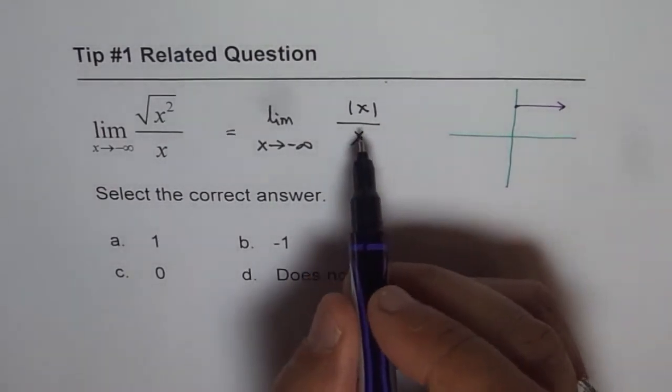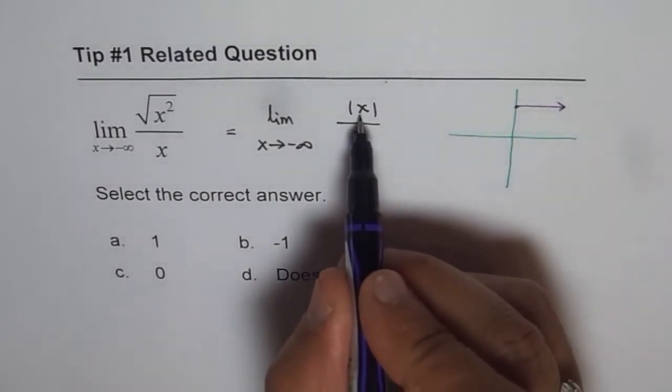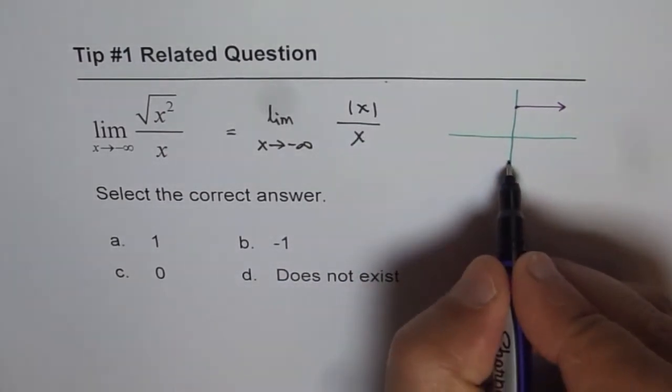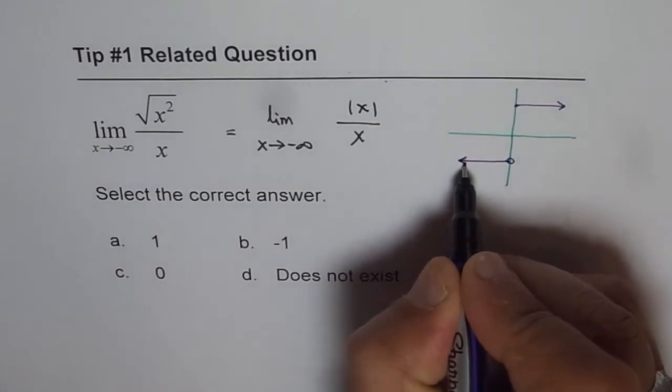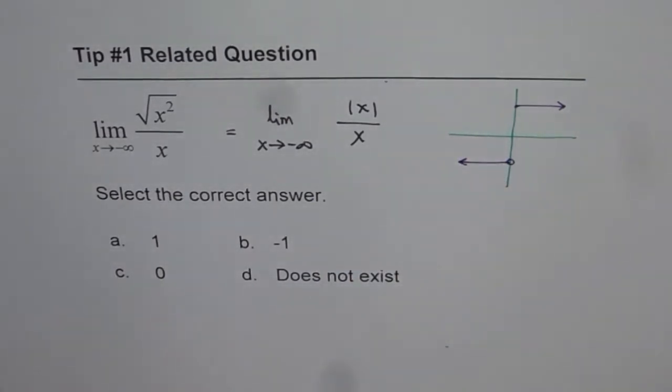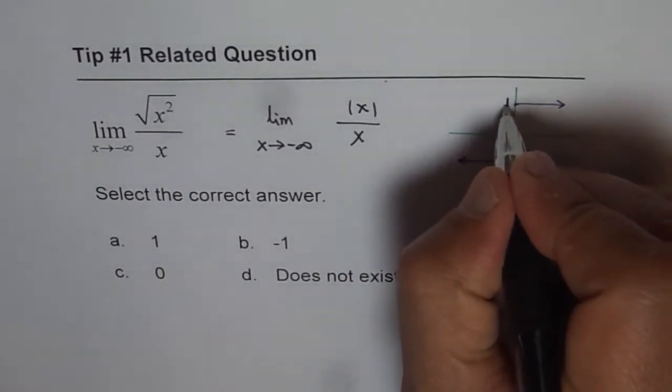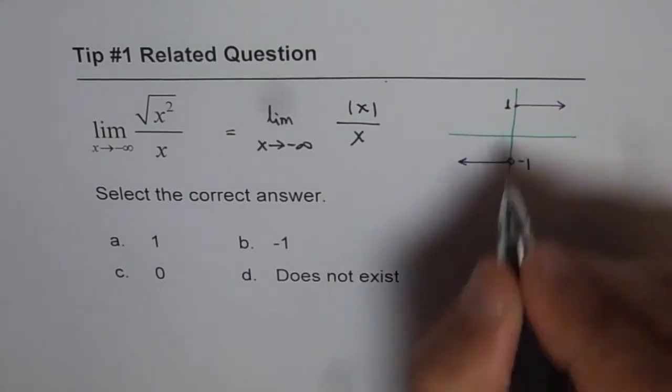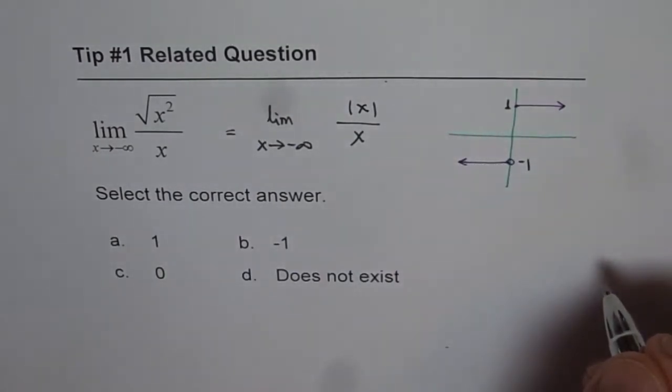But if x is less than 0, then absolute x will be minus x, and therefore the function will be minus 1. Do you see that? So that is how our function is going to look like.